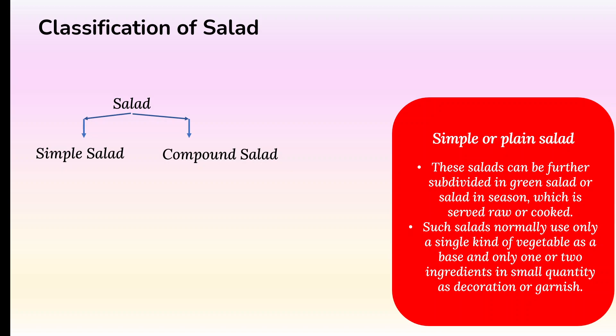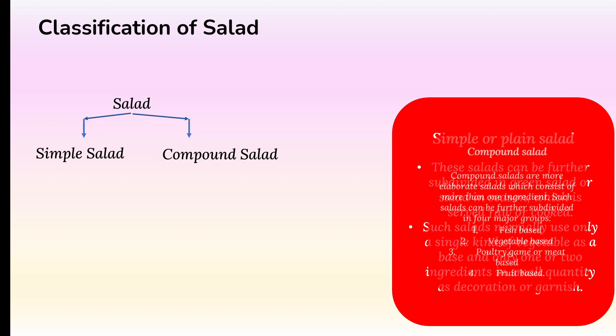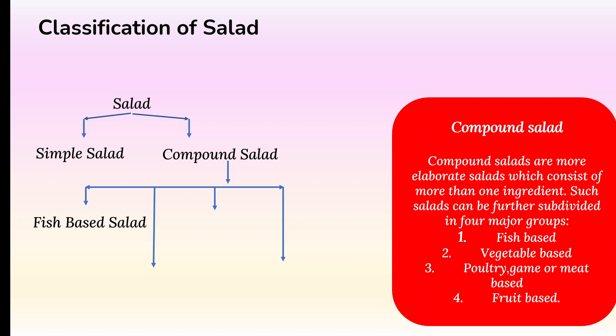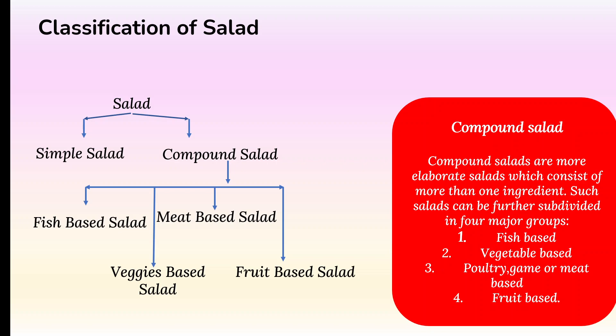The other type is known as compound salad. From the name, we understand it is not a single item — it is more than one ingredient. Compound salads are more elaborate salads consisting of more than one ingredient, and depending on these ingredients they can be given different categories: fish-based salads, vegetable-based salads, meat-based salads, and fruit-based salads. That is the total picture of the classification of salads.